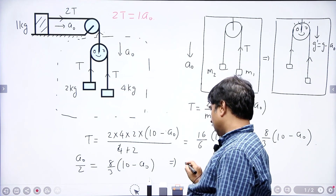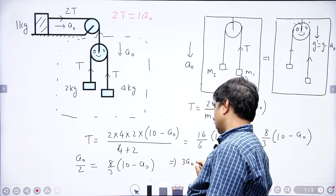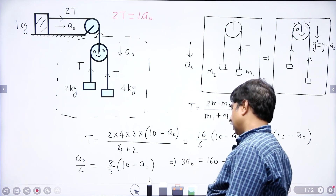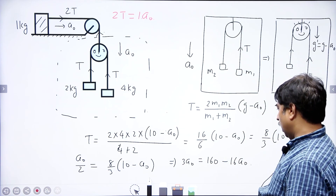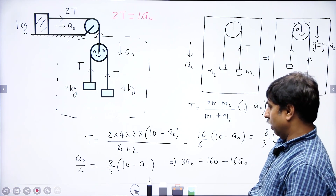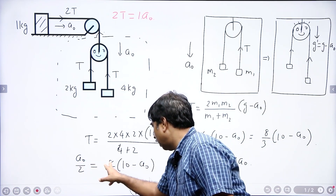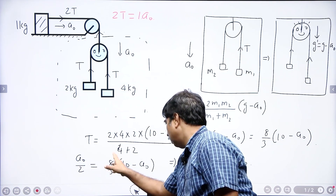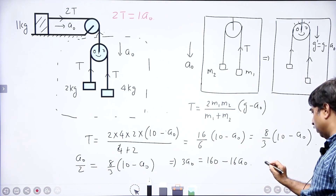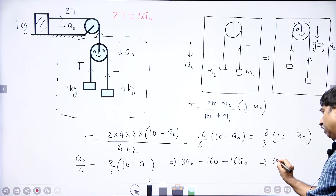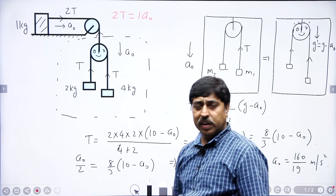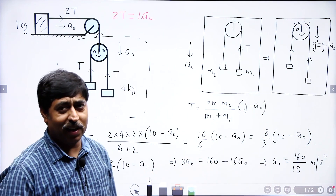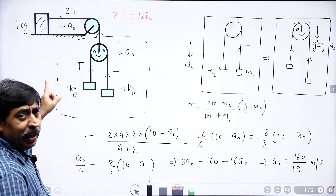Simplifying: 3A0 = 160 - 16A0, which gives 19A0 = 160, so A0 = 160/19 m/s². That is the value of A0. Please check the calculation — I may have committed a small error, but the method is correct.